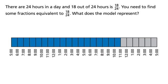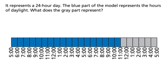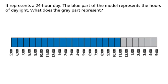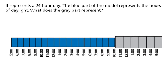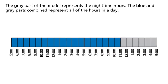You need to find some fractions equivalent to 18 24ths. What does the model represent? It represents a 24-hour day. The blue part of the model represents the hours of daylight. What does the gray part represent? The gray part represents the nighttime hours. The blue and gray parts combined represent all of the hours in a day.